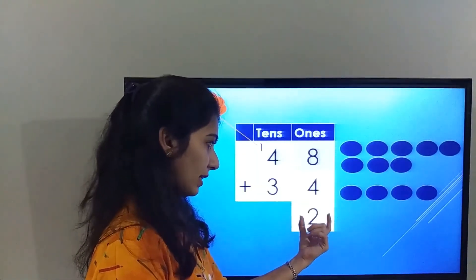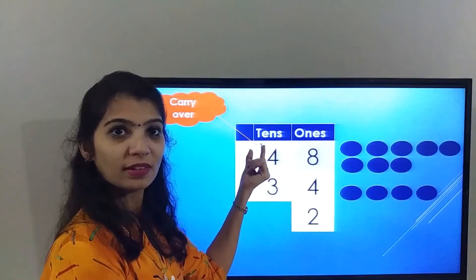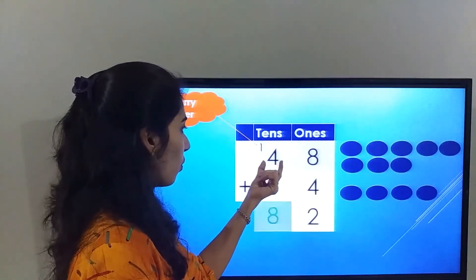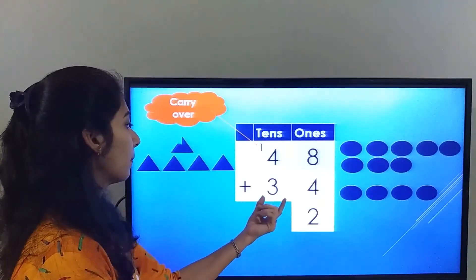Write 2 in the ones place and carry over 1 to the tens place. Let's solve the tens place: 4 plus 1 plus 3.